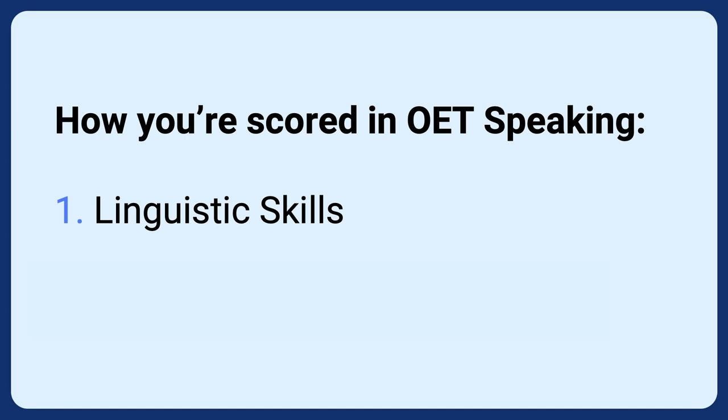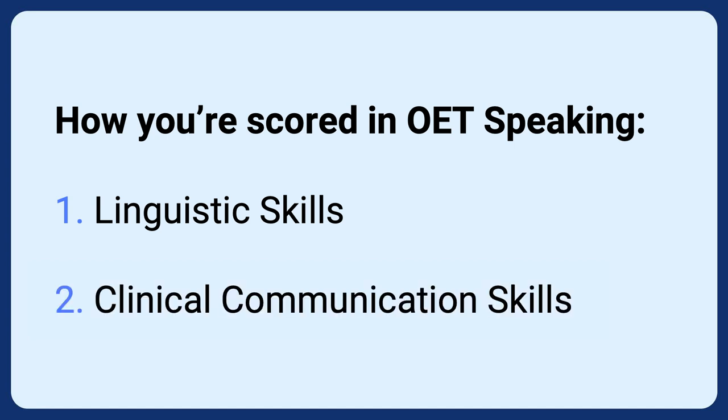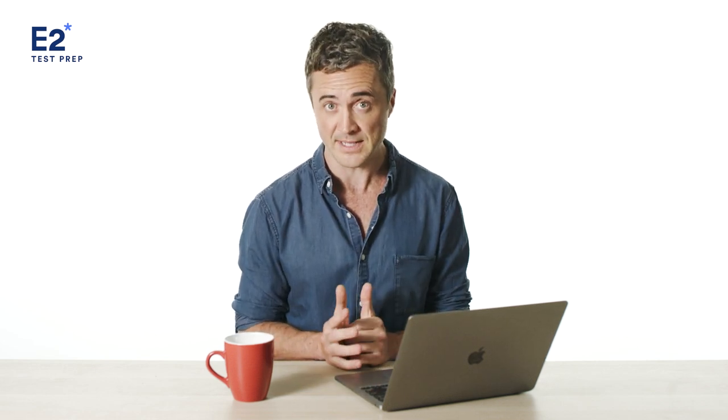In OET speaking, as you probably know, you complete two role plays and a recording of your performance is sent to two examiners who score you in two main ways. You're scored on your linguistic skills — that is how good your spoken English is — and you're also scored on your clinical communication skills, that is how well you deal with the patient. When preparing for OET, and especially if you don't have much time, you need to focus on these clinical communication skills. The reason is that they're much easier to improve than your linguistic skills.